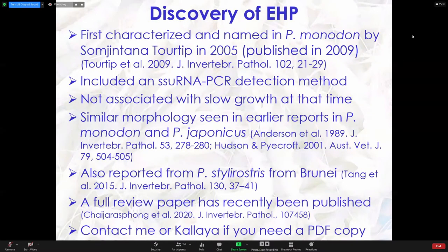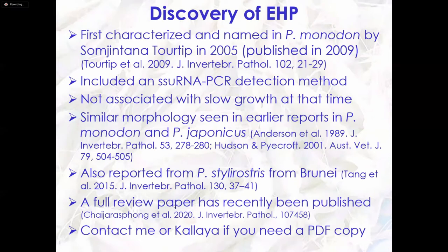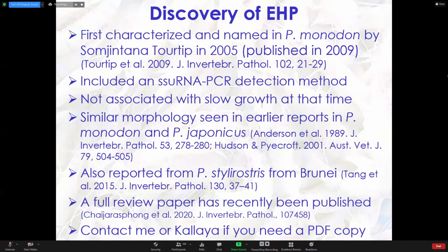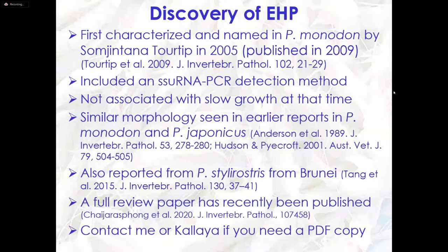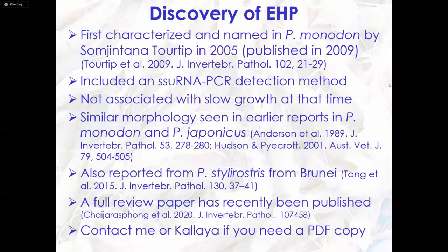EHP was first characterized and named in Penaeus monodon by Somjintana in her thesis in 2005, and then she published a paper in 2009. This included a small subunit RNA PCR detection method and how they decided to name it based on the sequence of that gene. It was not associated with slow growth at the time of that first discovery. Similar morphology had been seen in other reports in Penaeus monodon and Penaeus japonicus earlier, but only morphological — nobody really knew what it was. It has also been reported from Penaeus in Brunei by Kathy Tang and her colleagues.